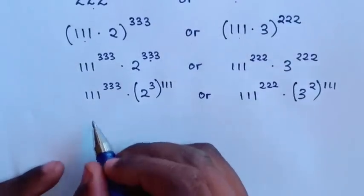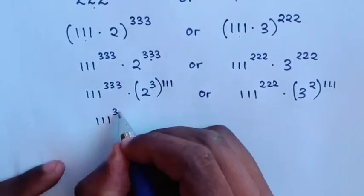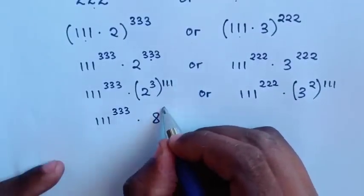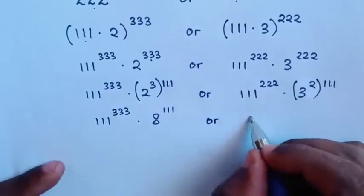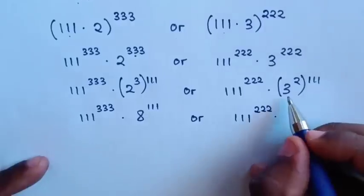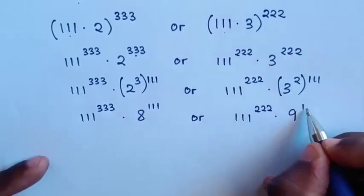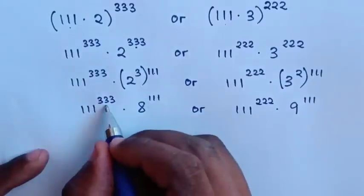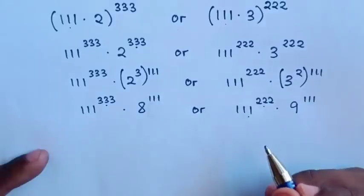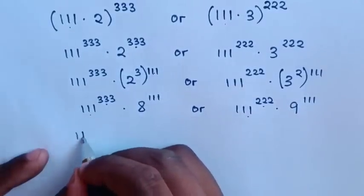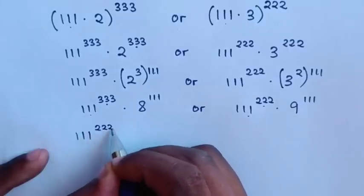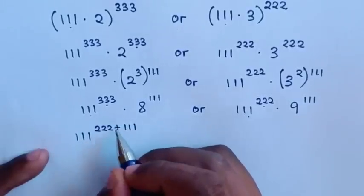Then, it will be 111 power of 222 times 3 power of 222 times 3 power of 2, which equals 111 power. From the exponent of 333, we make 111 power of 222 a common factor, so 111 power of 333 is the same as 111 power of 222 plus 111 power of 111. So this plus this equals this one.